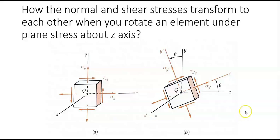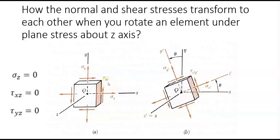We have these two normal components that are non-zero, and this tau xy, the shear stress, is also non-zero. The three other components of stress are zero: this normal stress and these two shear stresses.